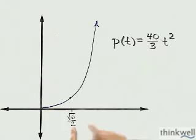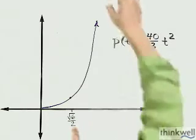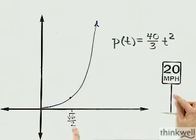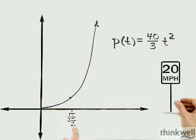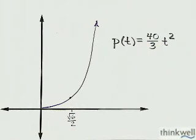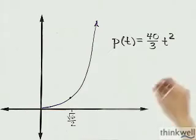And I marked off the very time, square root of six over two hours, which is 1.22 something hours. And that was the moment where I crossed the 20 mile an hour sign. And what I'd like to do is find the instantaneous velocity at that point. Let me tell you how we warmed up to that.